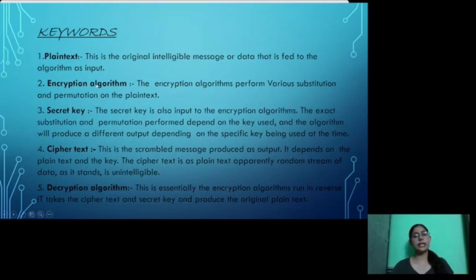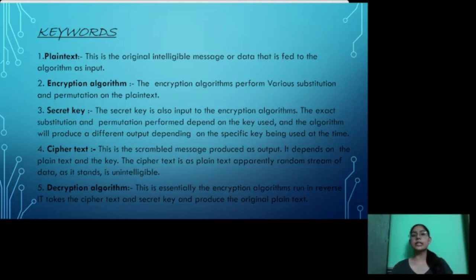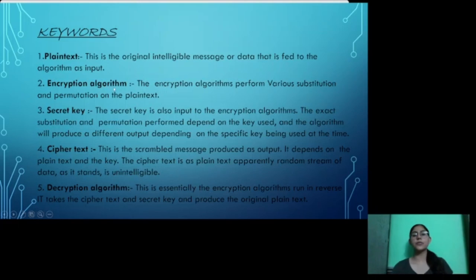Next is the encryption algorithm. We use an encryption algorithm to perform encryption. Our input is a plain text — a message. By the process of substitution and permutations, we convert that plain text into something that is not readable or understandable, using the encryption algorithm.